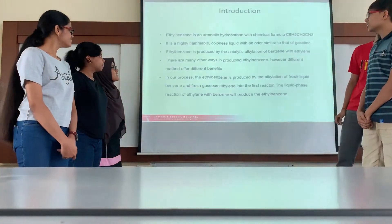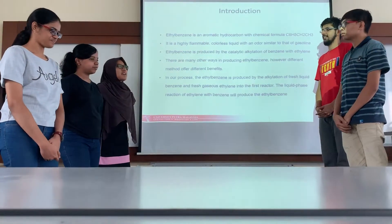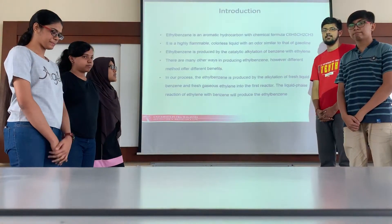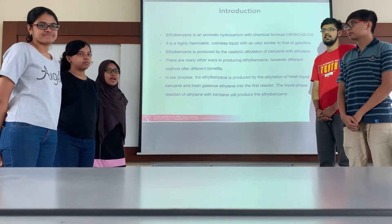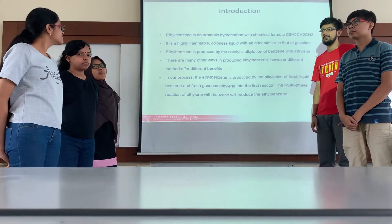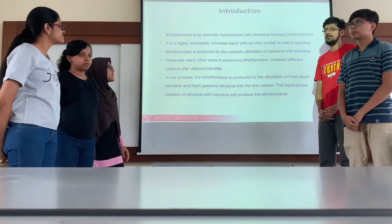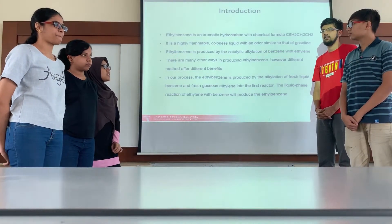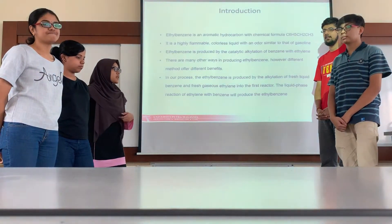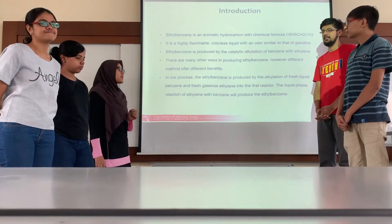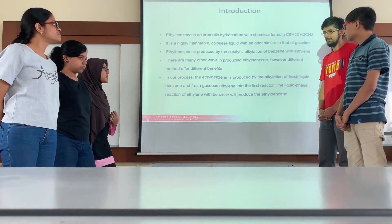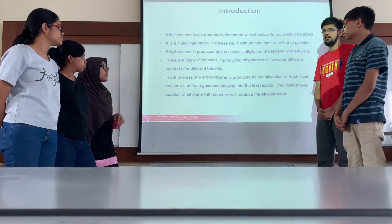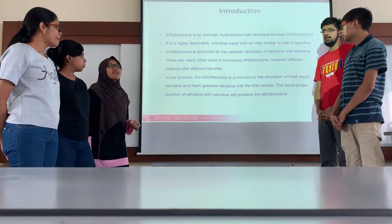So let's begin. For the introduction, ethylbenzene is an aromatic hydrocarbon with chemical formula C6H5CH2CH3. It is highly flammable, colorless liquid and has an odor similar to gasoline. Ethylbenzene is produced by the catalytic alkylation of benzene with ethylene. In our process, ethylbenzene is produced by the alkylation of liquid benzene with gaseous ethylene into the first reactor. The liquid phase reaction of benzene with ethylene will produce the ethylbenzene.